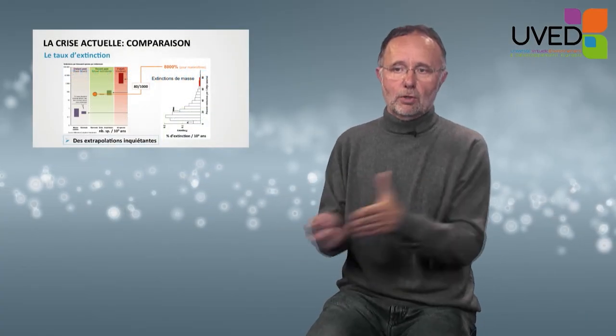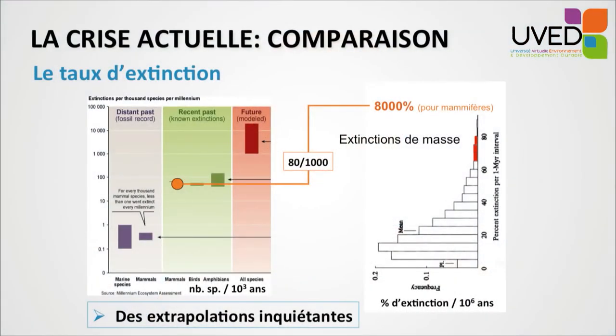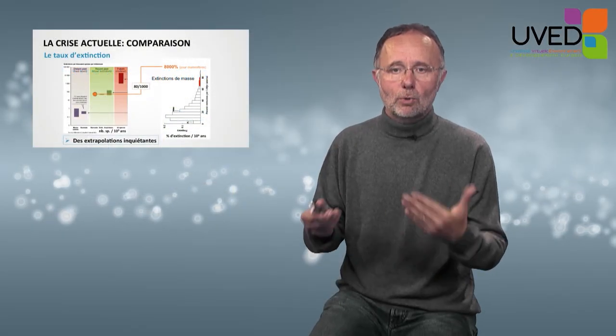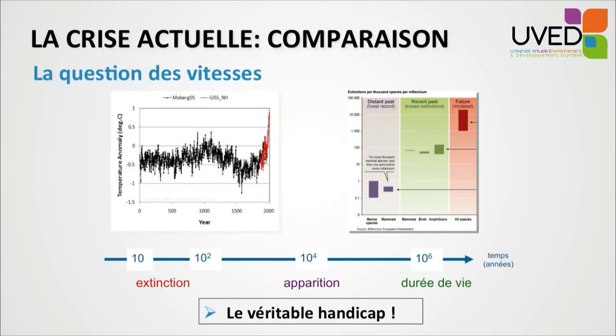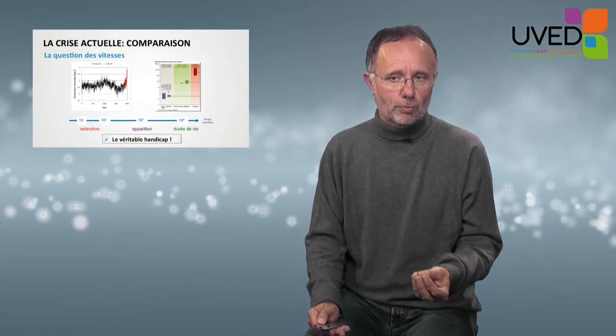This is obviously frightening — 80% for a major crisis versus 8,000% nowadays would be much, much faster. Of course, this must be taken with a pinch of salt and we might be mistaken in the figures. We are also observing an instantaneous speed, whereas the historical curve provides average speed over millions of years. But still, the extrapolation is quite worrying, because even if we are wrong by two orders of magnitude, it means we are at least going as fast as the ancient crises. Speed is very important — it's essential. Species extinction takes between 10 and 100 years, but making a new species takes 10,000 years, and the life cycle of a species is 1 million years. The real problem is the speed at which change is taking place — not the amplitude, but the speed.